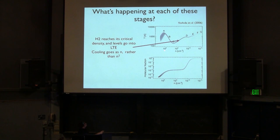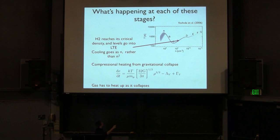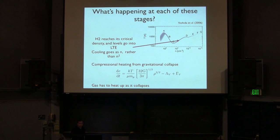At higher densities the gas starts to gradually heat again because H2 has reached its critical density and is now in LTE cooling, where the cooling rate goes as n rather than n^2. However, gravitational compressional heating goes as n^(3/2), so gravitational heating wins. The cooling time is now longer than the free-fall time, and the gas heats up gradually as it collapses, needing to heat up to balance the gravitational heating rate. A similar gradual rise is seen with dust temperature cooling in the present-day universe.